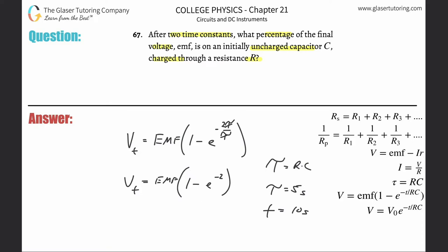Okay, so ready? Let's do one minus E to the negative two. The reason why I said second is because that's the operation in the calculator. So this will be 0.865 roughly rounding. So in other words, whatever the full EMF is after two time constants, 0.865 or about 86.5% will be charged.